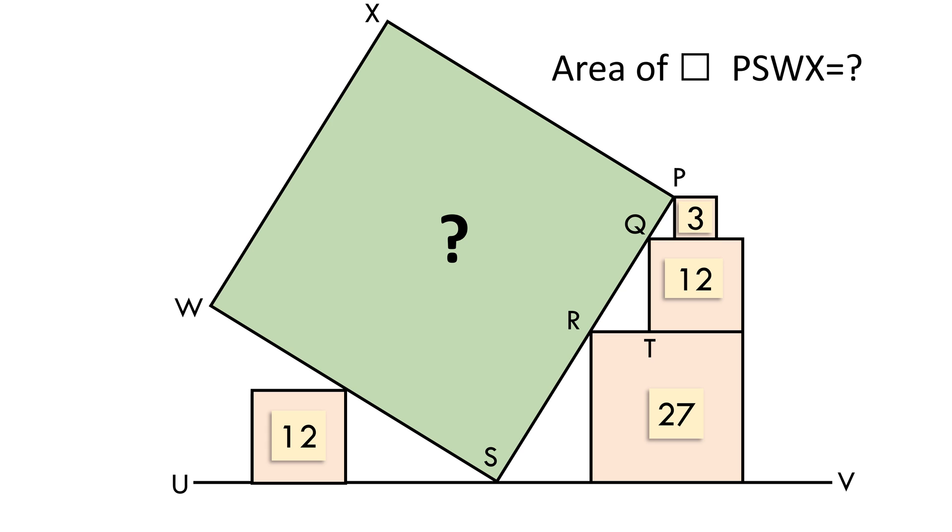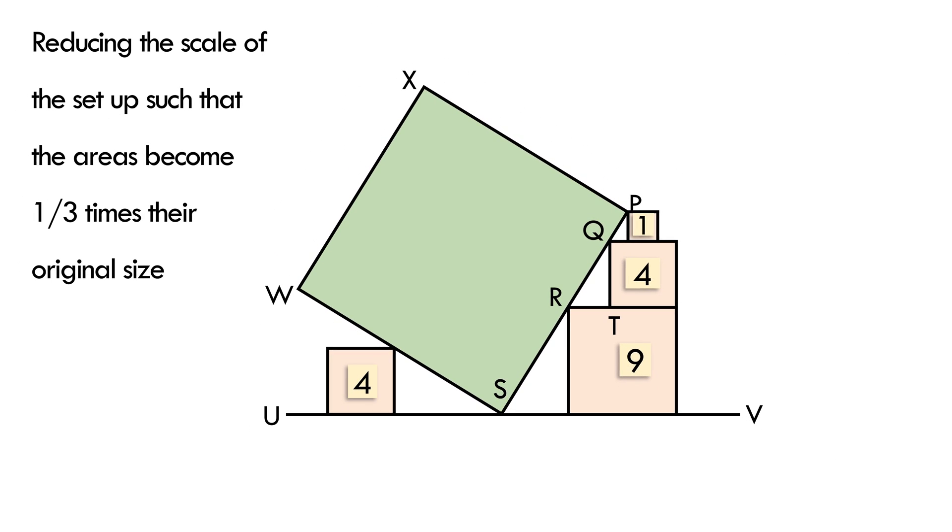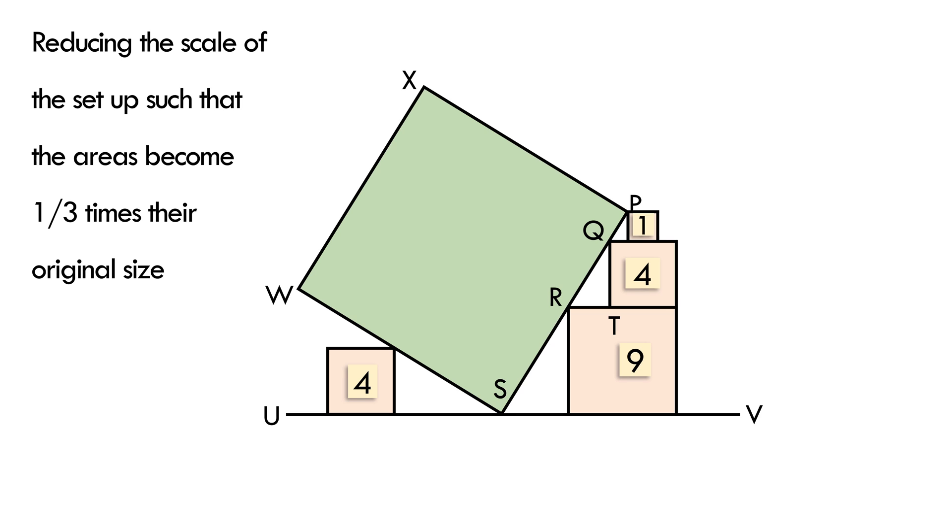So what we'll do is to reduce the scale of the entire setup by 3 times and we see that all the areas have become nice square numbers which are easy to work with as the sides turn out to be nice whole numbers.